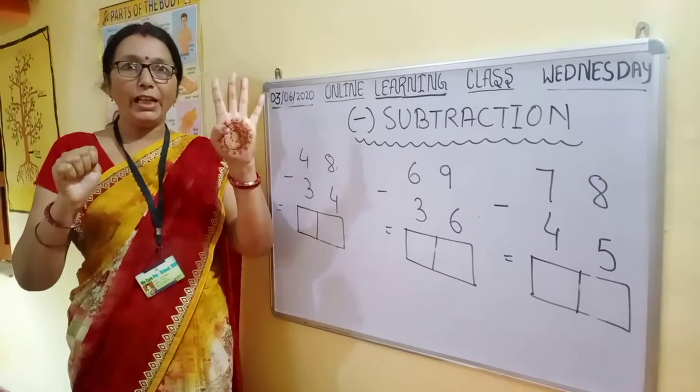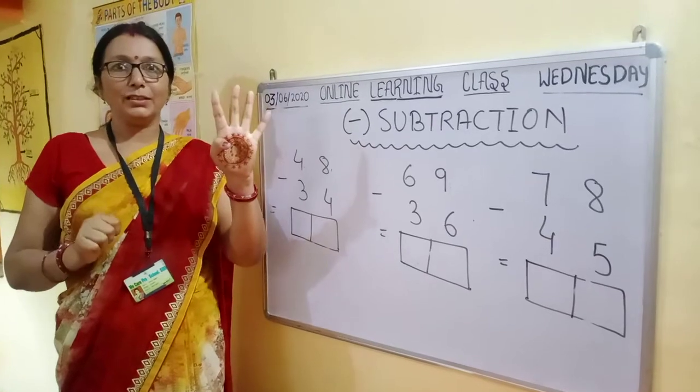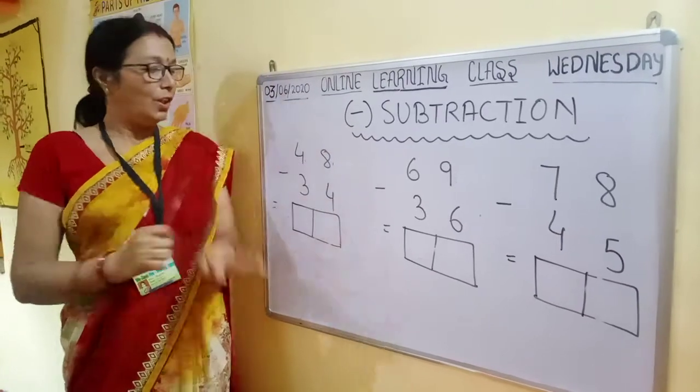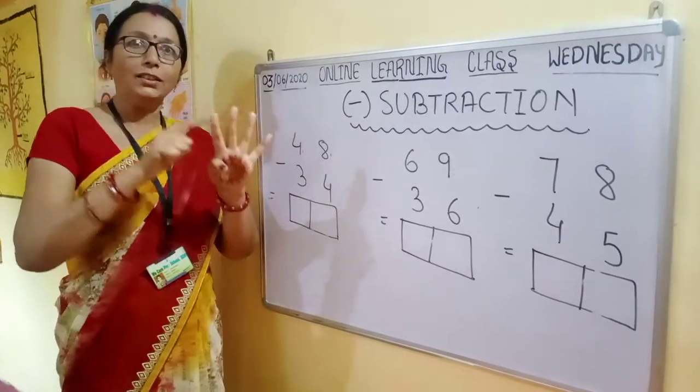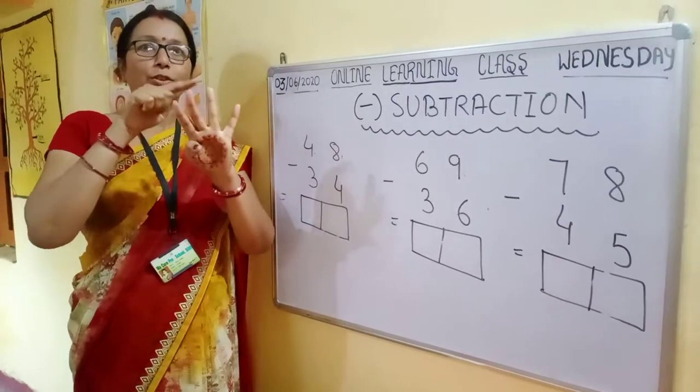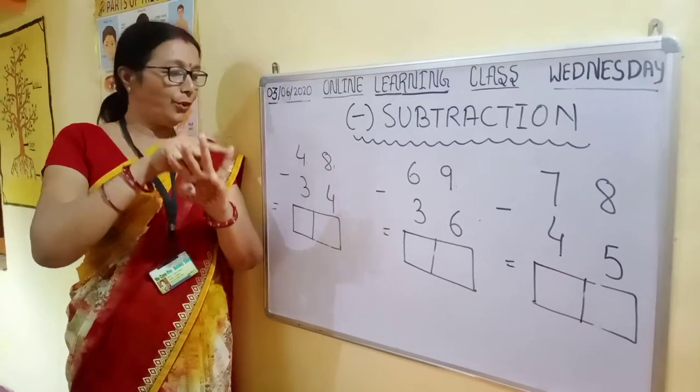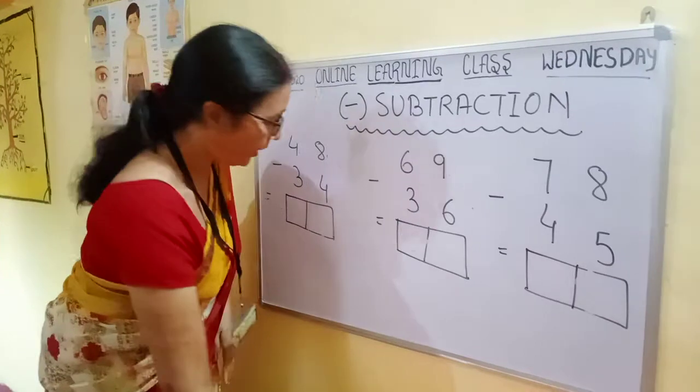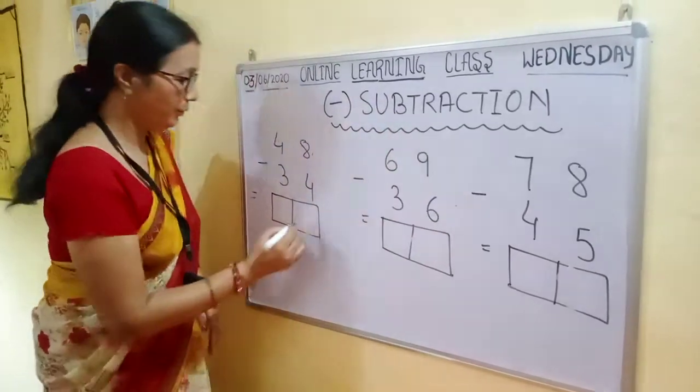Now the next number is 4. Take away 4 fingers — 1, 2, 3, 4. How many fingers are left? Count: 1, 2, 3, 4. Write down 4.